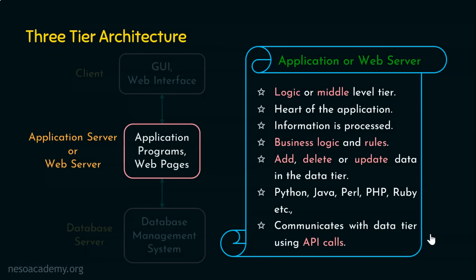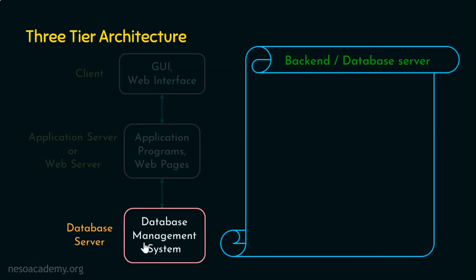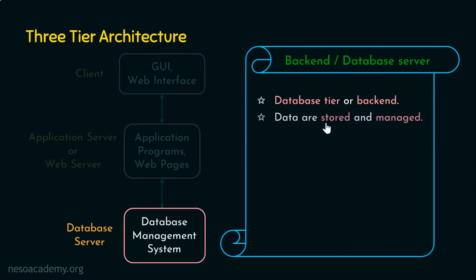Let's now move to the bottom-most tier — the database tier. This is the back end where the data are actually stored. The database server resides at this level along with the physical database and physical storage. The data are stored and managed here, which is the job of the DBMS. This tier interacts with the application tier and not directly with the client or presentation tier in a three-tier architecture.